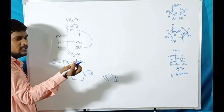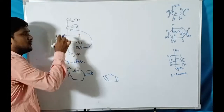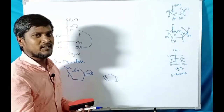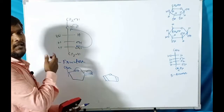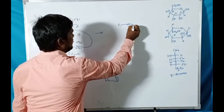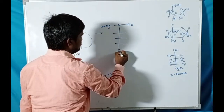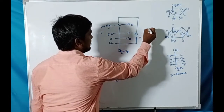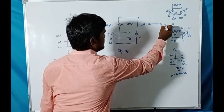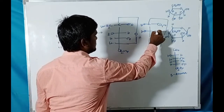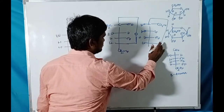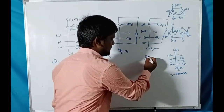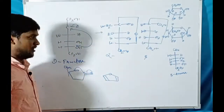The ring closure gives two types of isomers. The nucleophilic attack of the oxygen lone pairs on the electrophilic carbonyl carbon can occur from two sides. If the nucleophile attacks from the back side, OH appears on the right side. If the nucleophile attacks from the front side, OH appears on the left side. So two isomers are formed. When OH is on the right side, it is the alpha isomer; when OH is on the left side, it is the beta isomer.